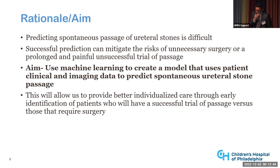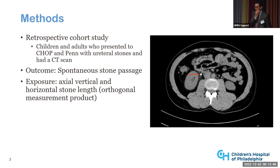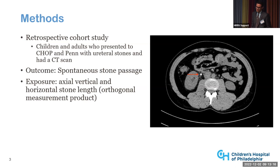This is a retrospective cohort study with data from about 2004 to 2020. We have children and adults who presented to CHOP and Penn with ureteral stones and had a CT scan. The outcome is spontaneous stone passage, and our exposure is axial, vertical, and horizontal stone length, which we combine into an orthogonal measurement product.